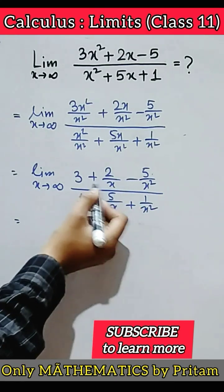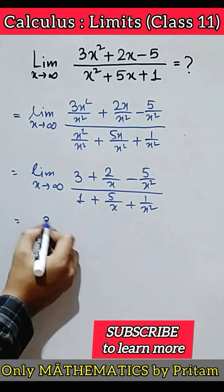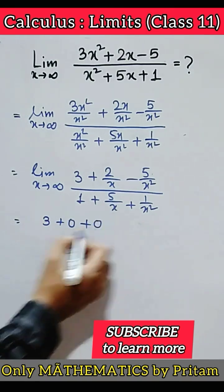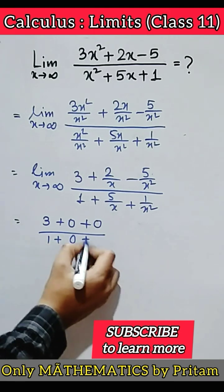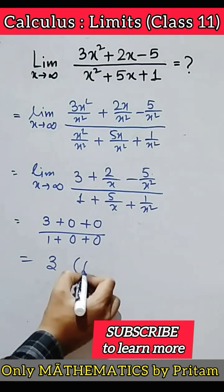Now we know that something by infinity will be 0. So you can write 3 plus 0 plus 0 by 1 plus 0 plus 0. So 3 is the right answer.